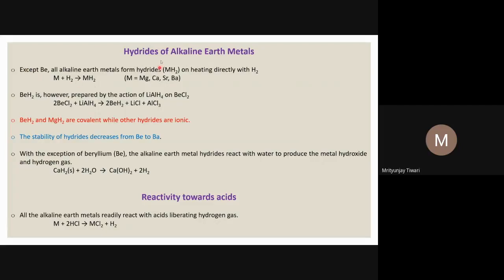Except beryllium, all alkaline earth metals — magnesium, calcium, strontium, and barium — form hydrides on heating directly with hydrogen. They all form ionic hydrides. The reaction is: M + H₂ → MH₂, where M is magnesium, calcium, strontium, or barium. MH₂ is the formula of the ionic hydride of alkaline earth metals.